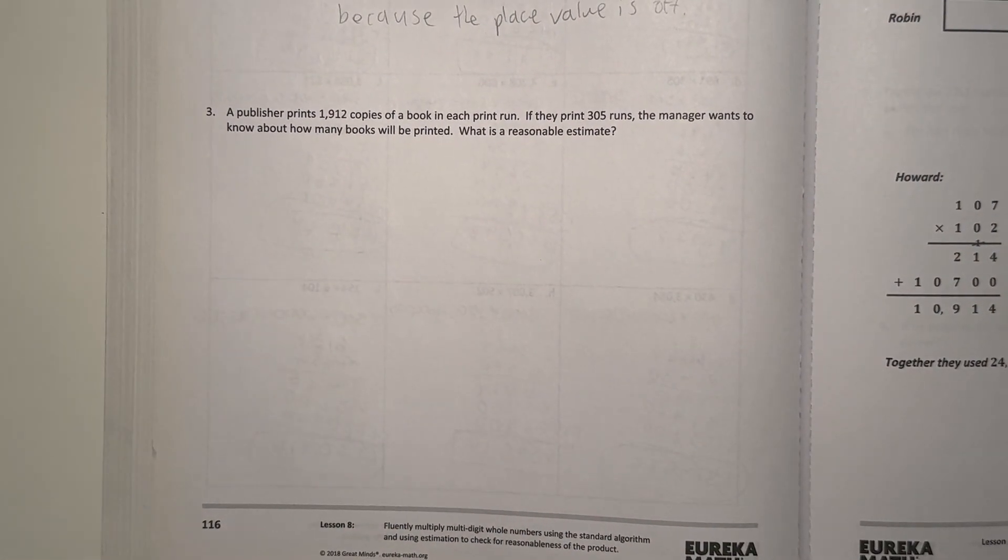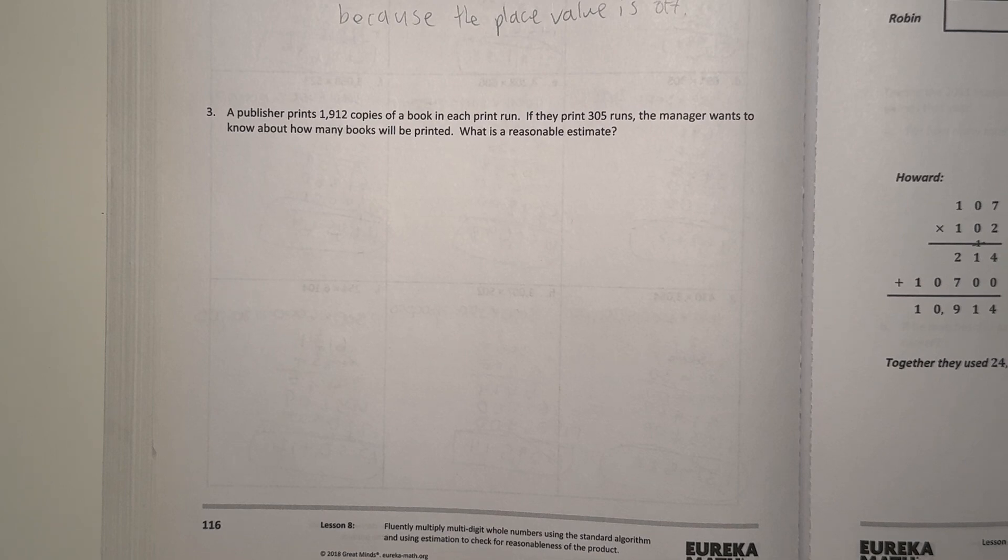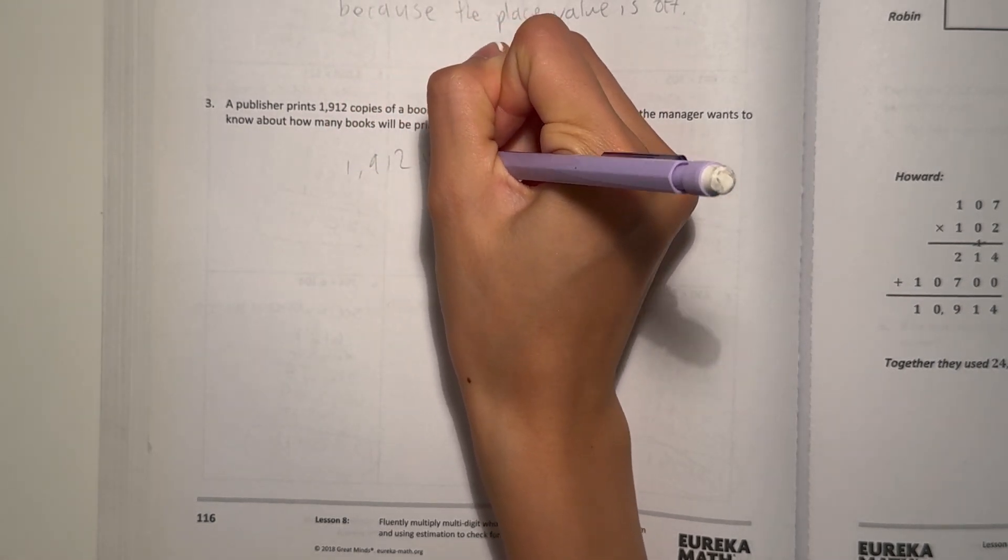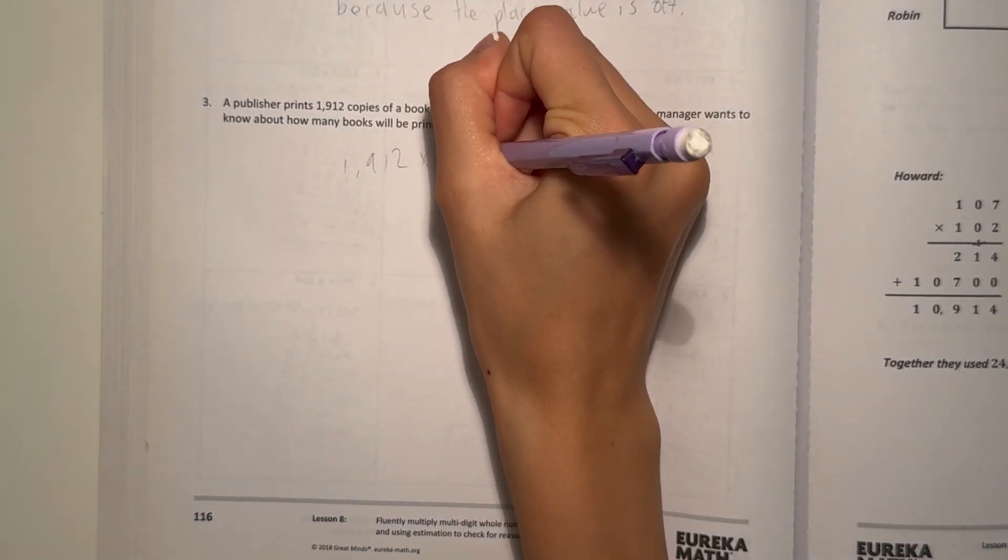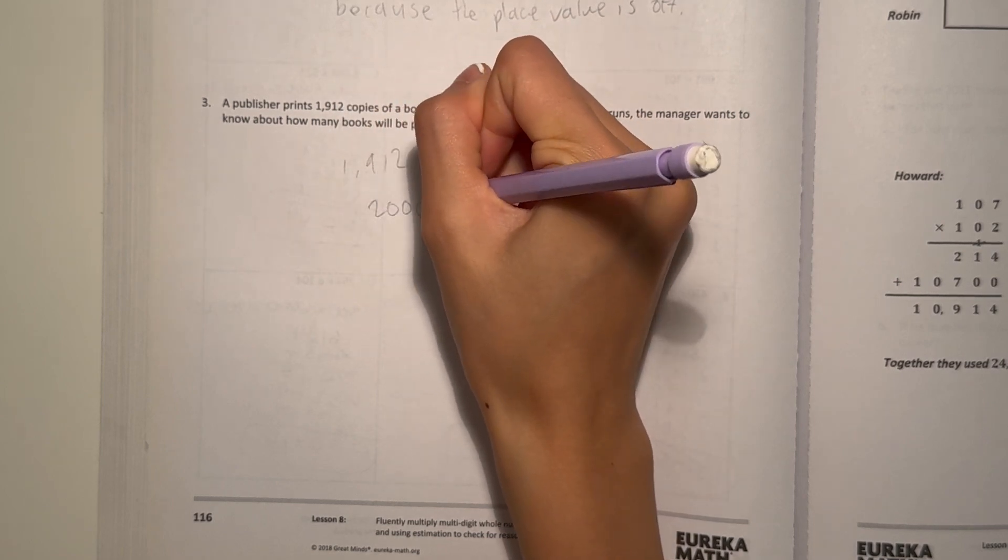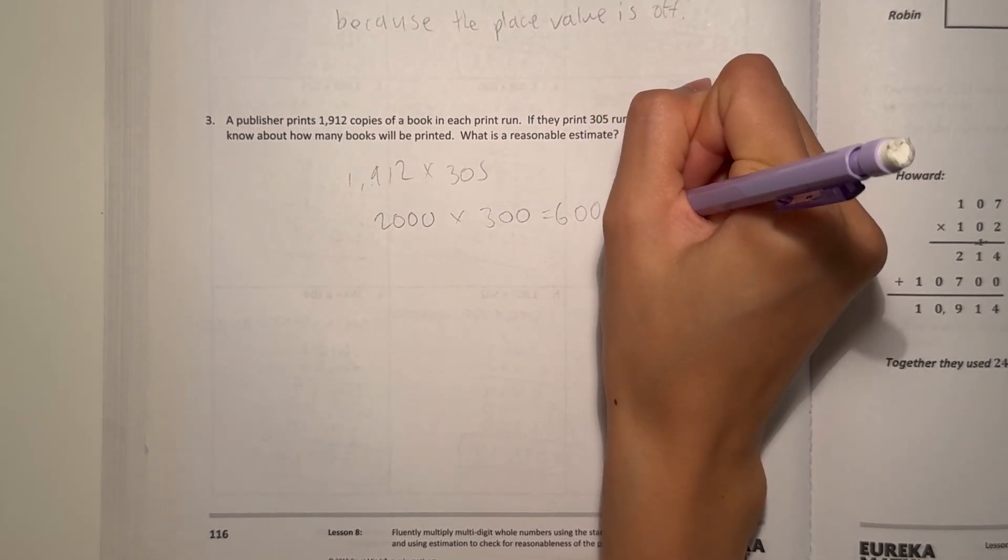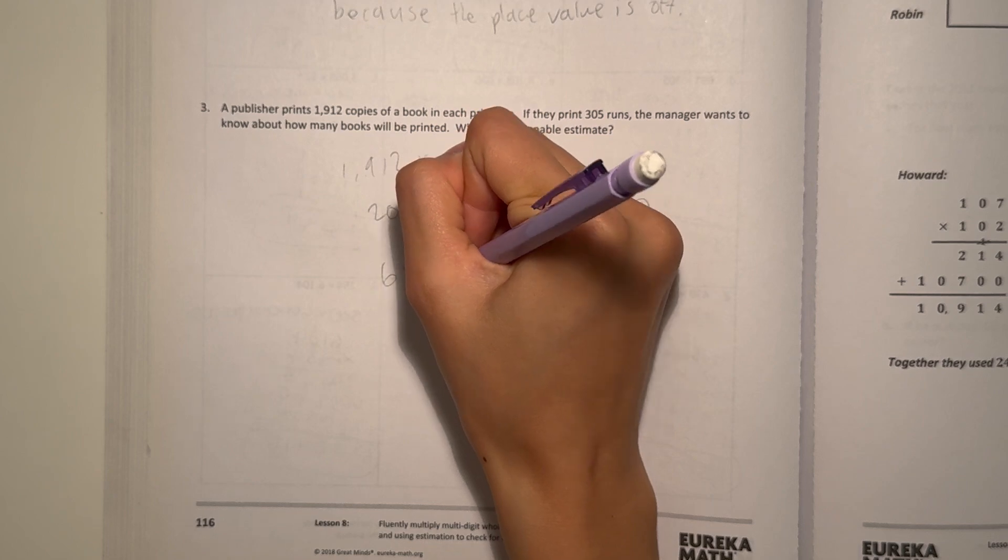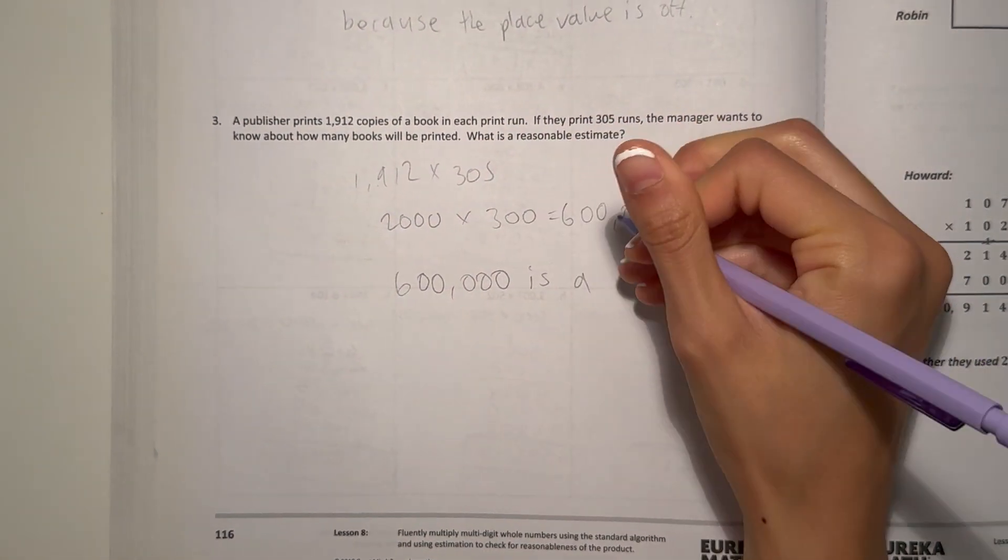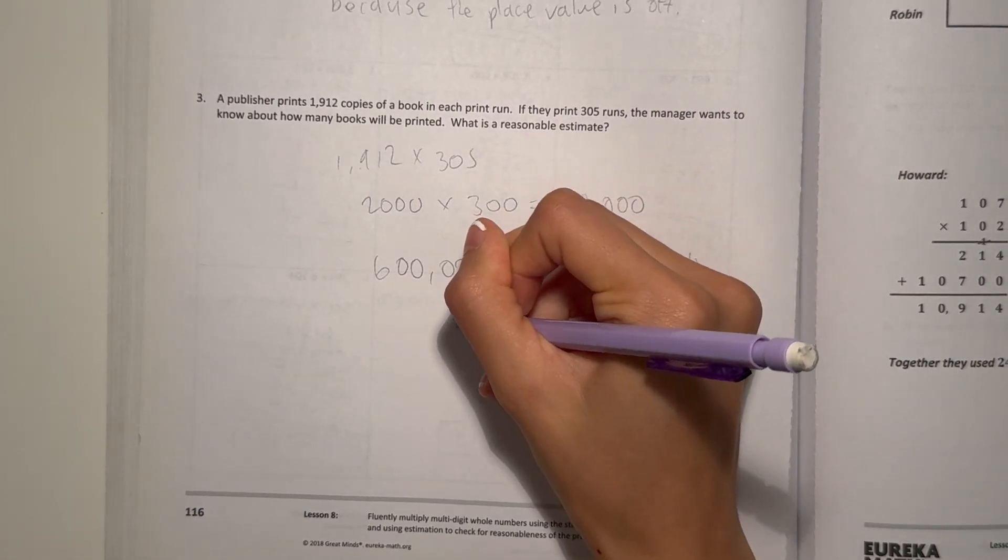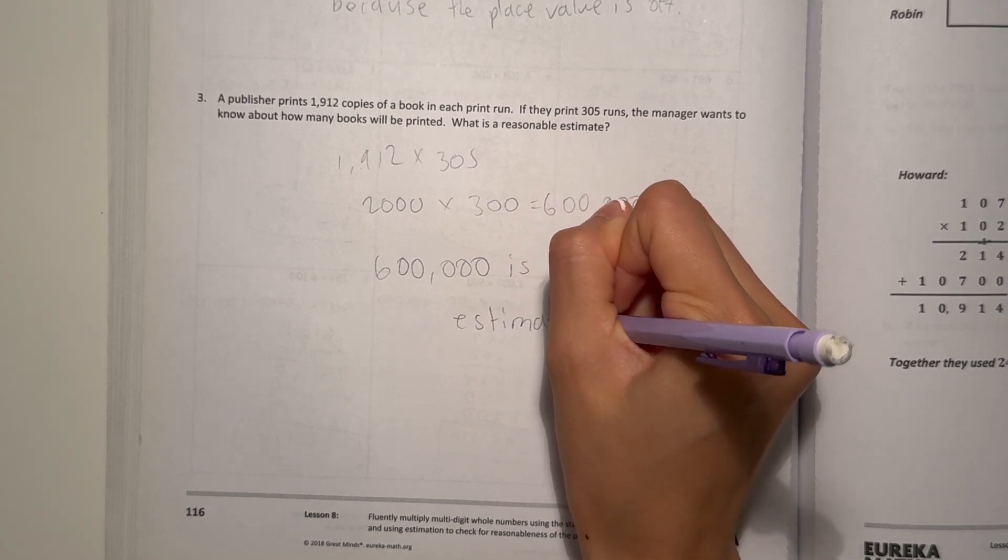And A, a publisher prints 1,912 copies of a book in each print run. They print 305 runs. The manager wants to know how many books will be printed. What is a reasonable estimate? 1,912 times 305. I'll round to 2,000 times 300. And that will give us 600,000. So we can write 600,000 is a reasonable estimate.